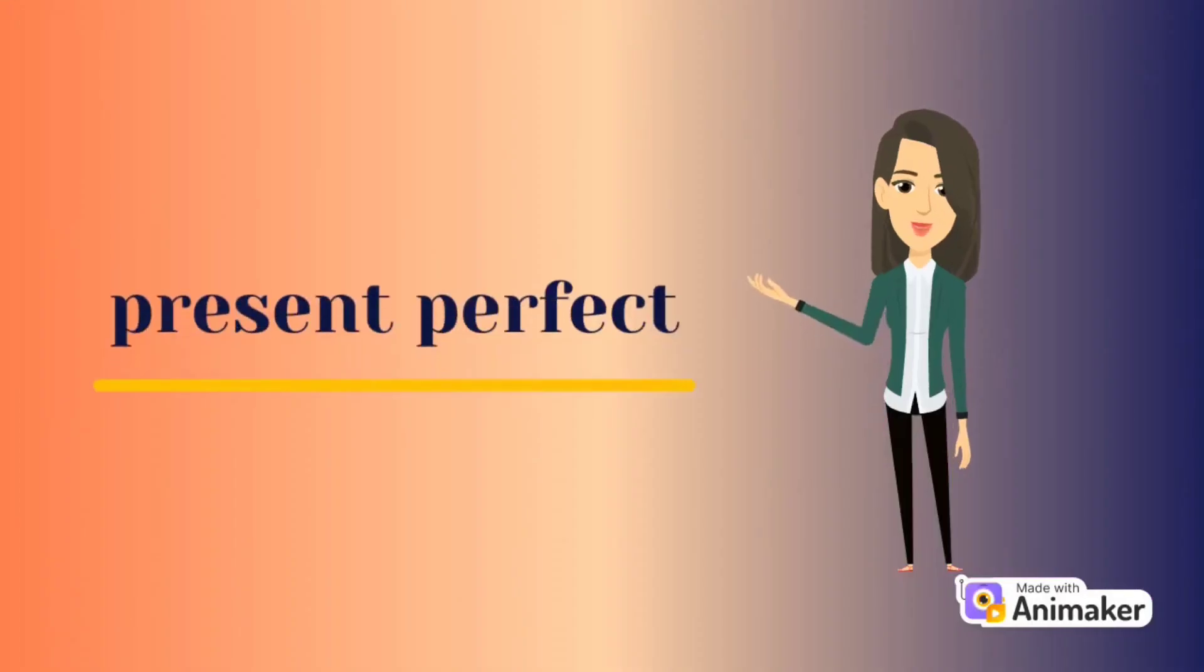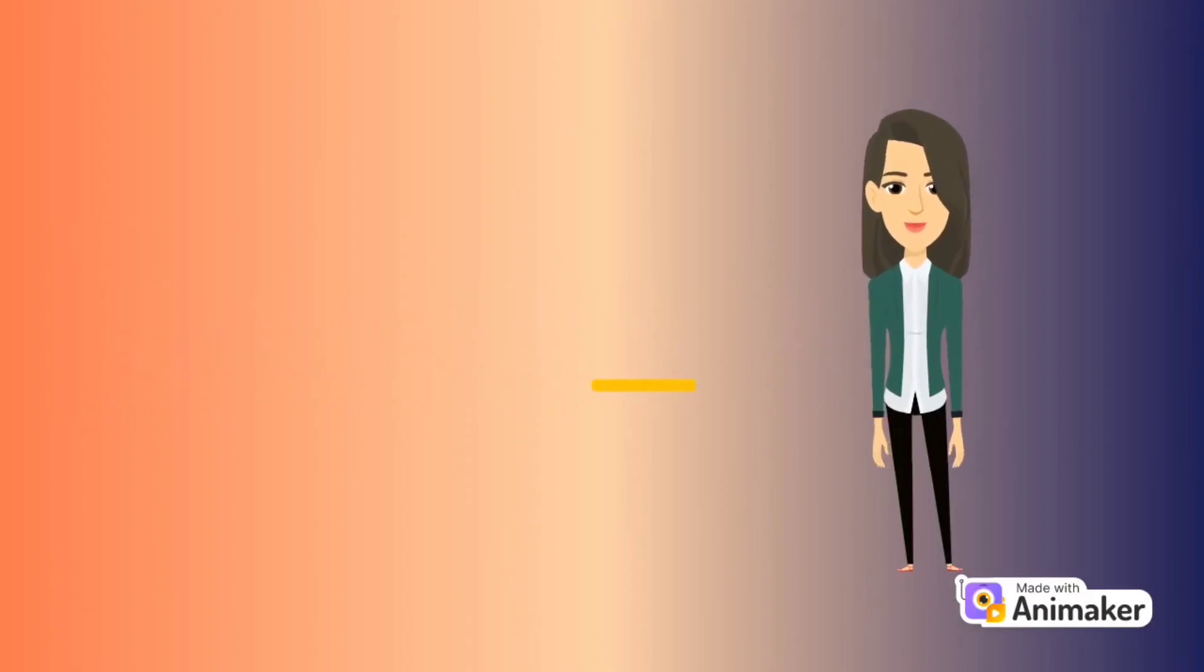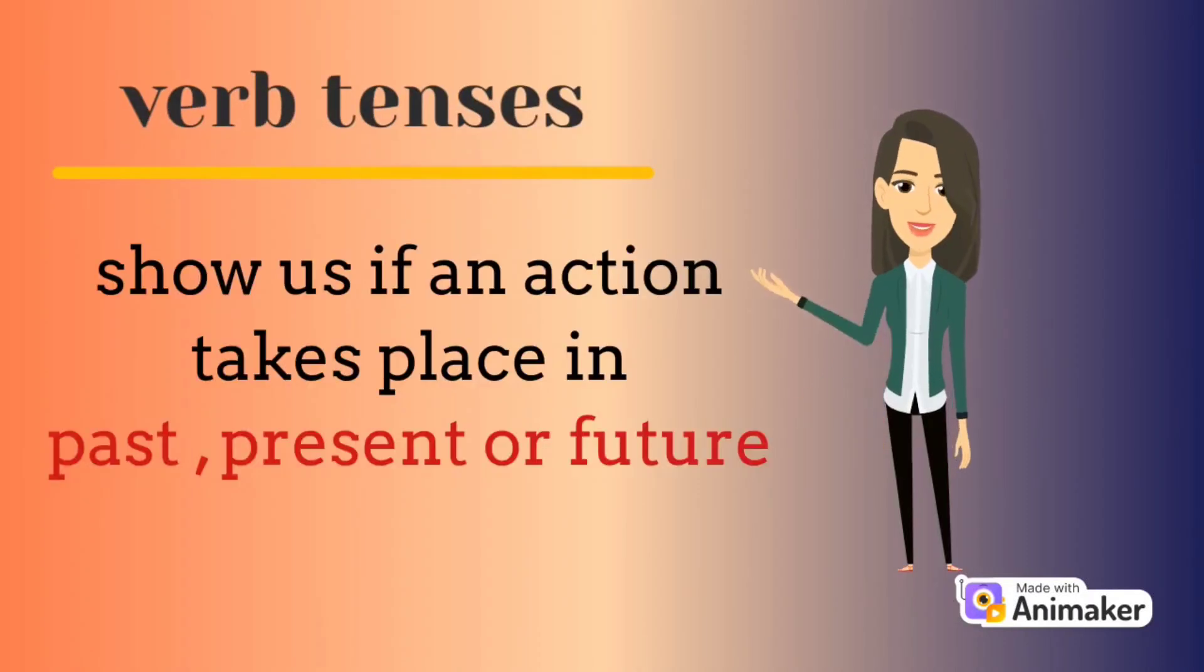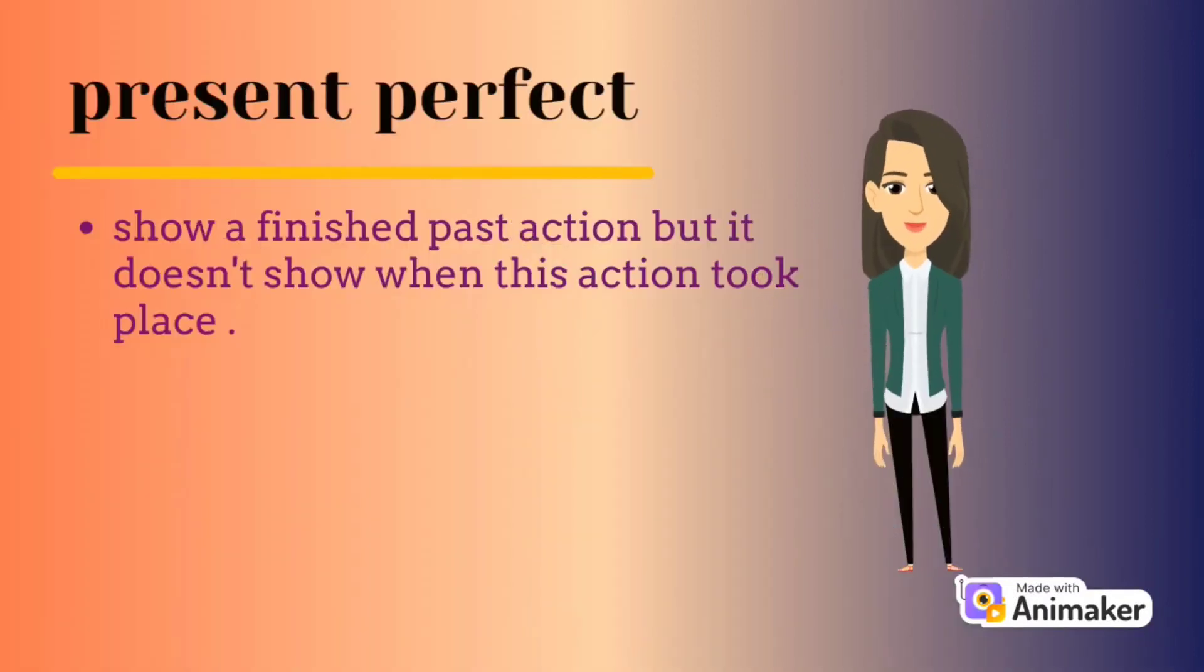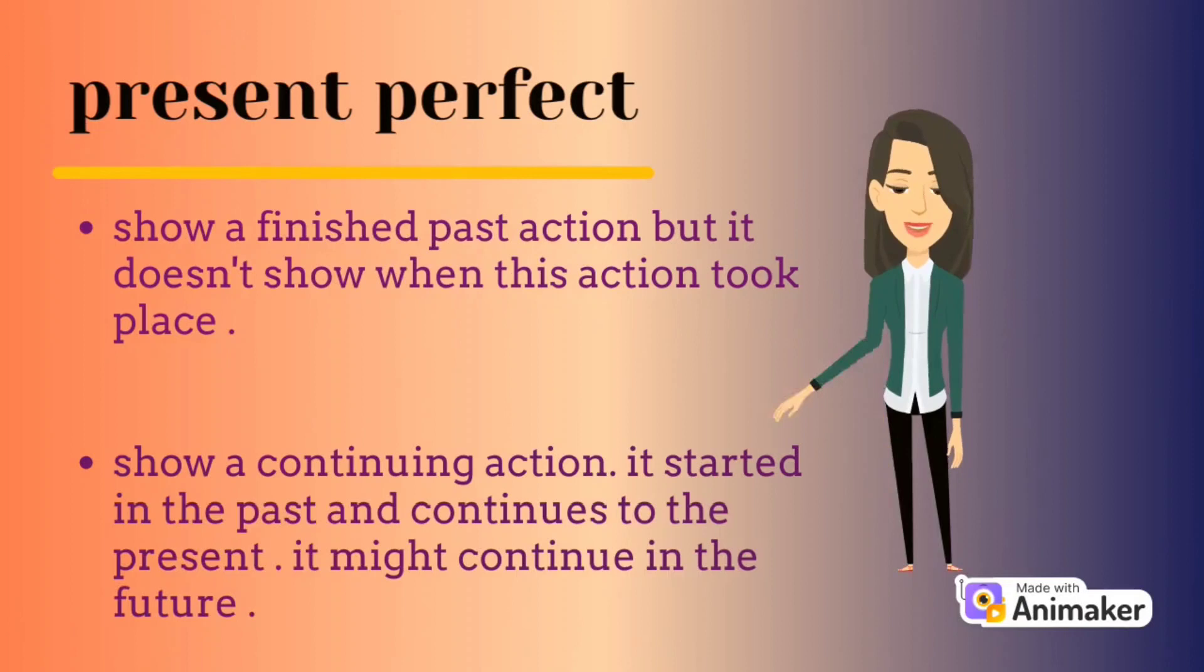Present perfect. Today we will talk about it. What are verb tenses? Verb tenses show us if an action takes place in past, present, or future. Present perfect shows a finished past action, but it doesn't show when this action took place.